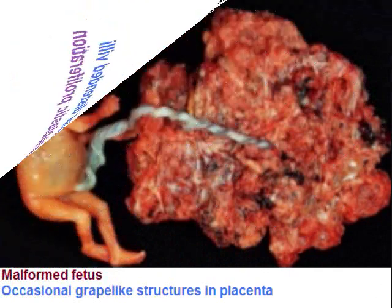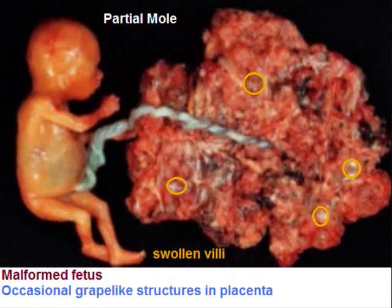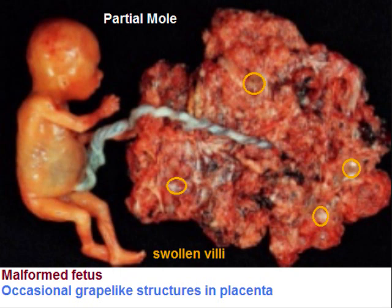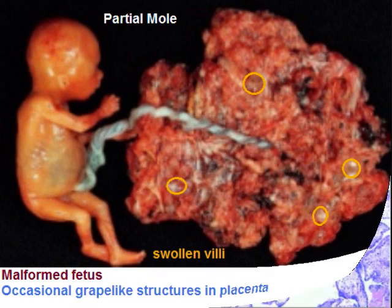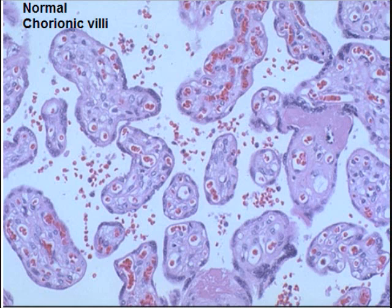In the case of partial mole, there is a malformed fetus and occasional grape-like structures in the placenta. Under the microscope, there are two populations of villi: dilated avascular distended villi and small fibrotic villi. The dilated villi are in the lower part and the bluish lines are arrowing towards the fibrotic villi.